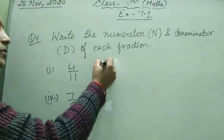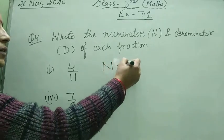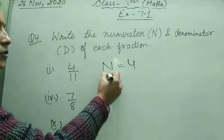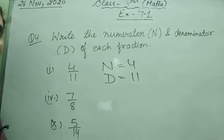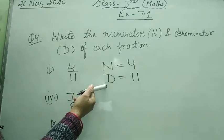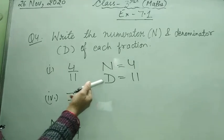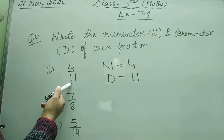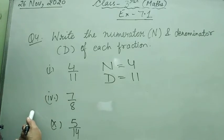So here, N means numerator will be 4, and D that is denominator equals 11. Remember this: D for down, D for denominator. Denominator is where? The down one. What's down? 11 in this question. Clear?